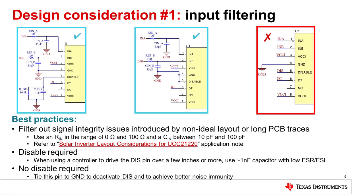Separating the controller from the disable pin by a distance of a few inches or more can introduce unwanted parasitic inductances that can cause ringing. In this case, if the disable function is required, use a low ESR/ESL capacitor with a value of approximately 1 nanofarad to reduce these effects. If no disable is required, tie the disable pin to ground in order to deactivate this function and to achieve better noise immunity.